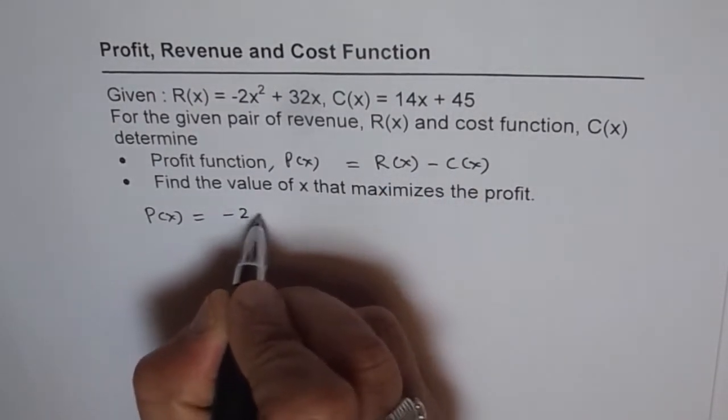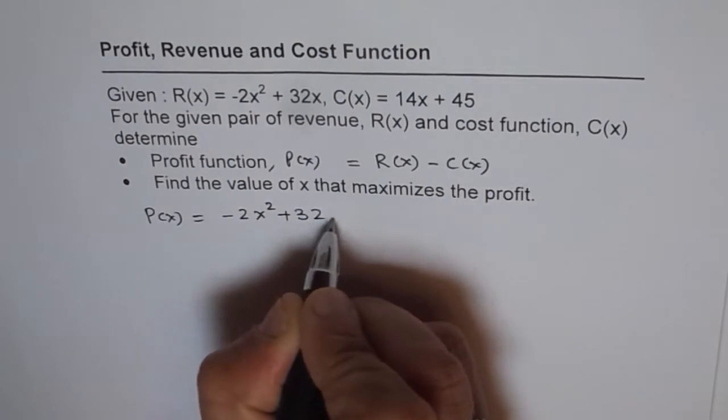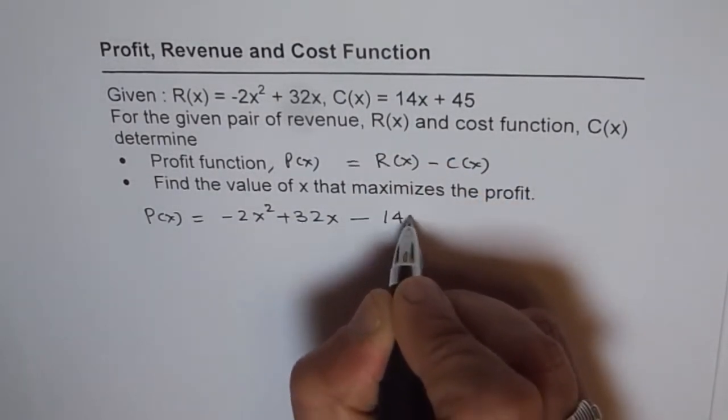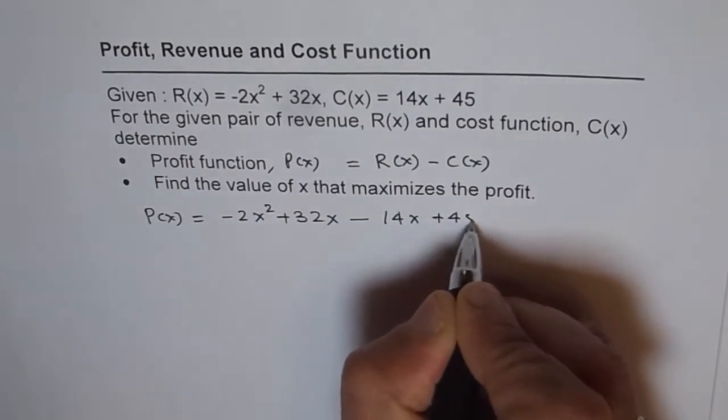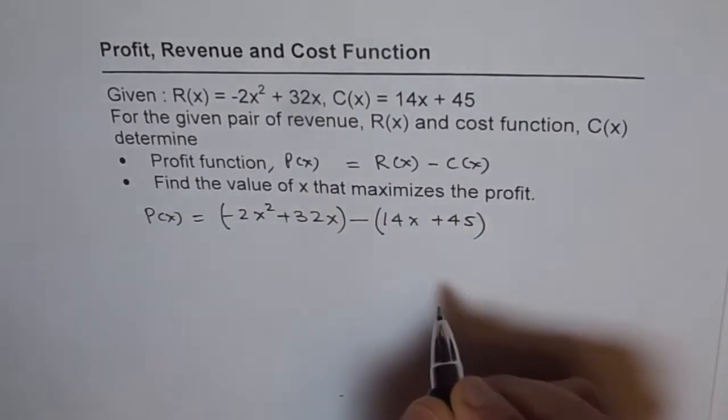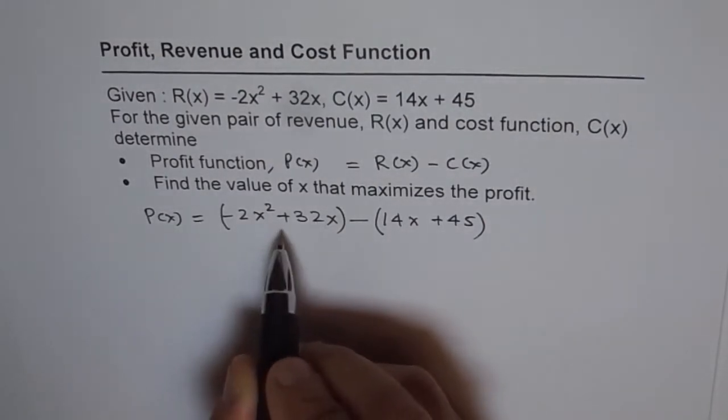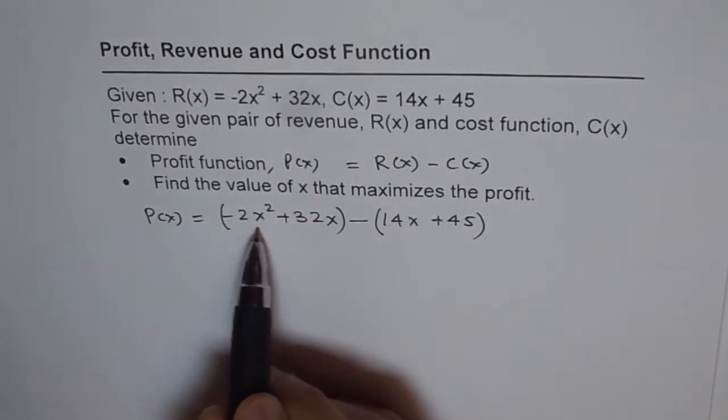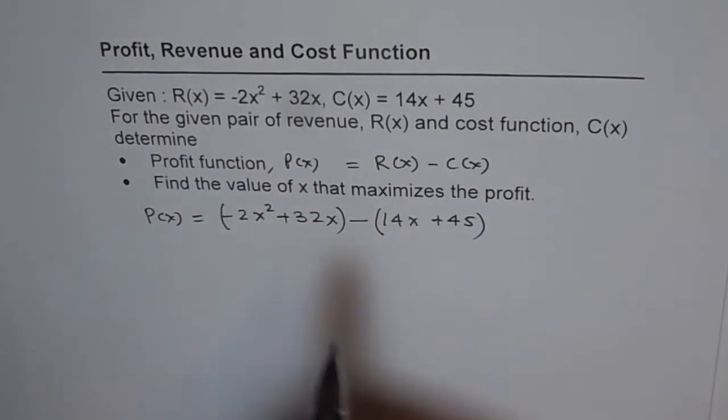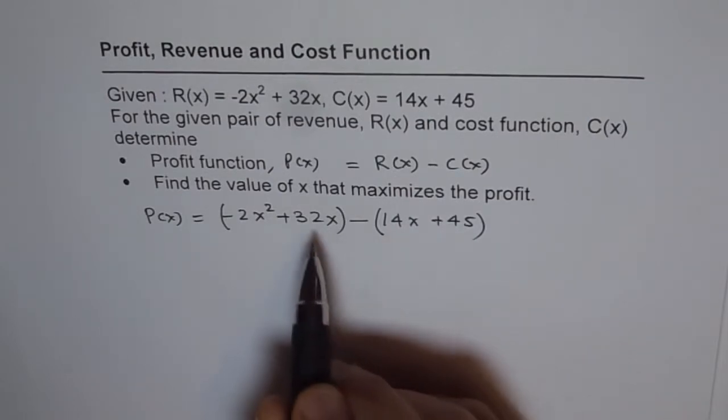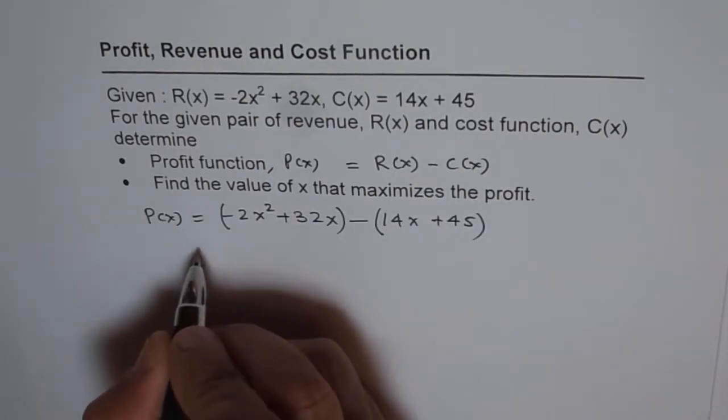It could be written as -2x² + 32x minus the cost function, which is 14x + 45. So, this is how we can find the profit function. Profit function is revenue function minus cost function. We are given revenue function as -2x² + 32x, and the cost function is 14x + 45. Their difference is going to give us profit function.